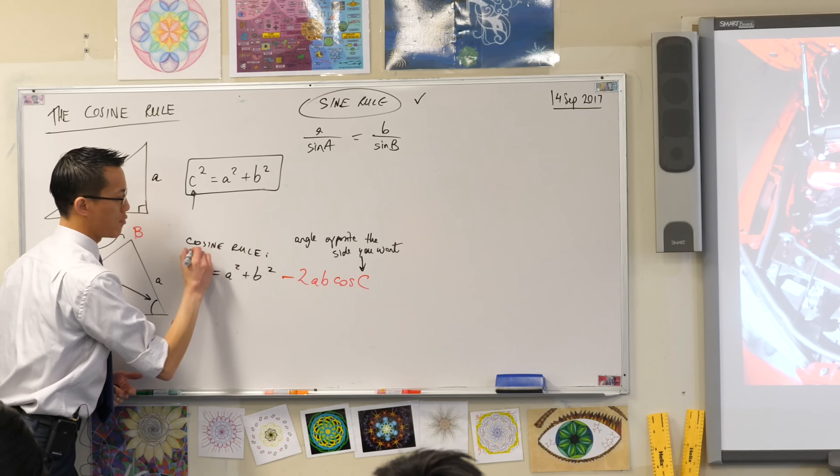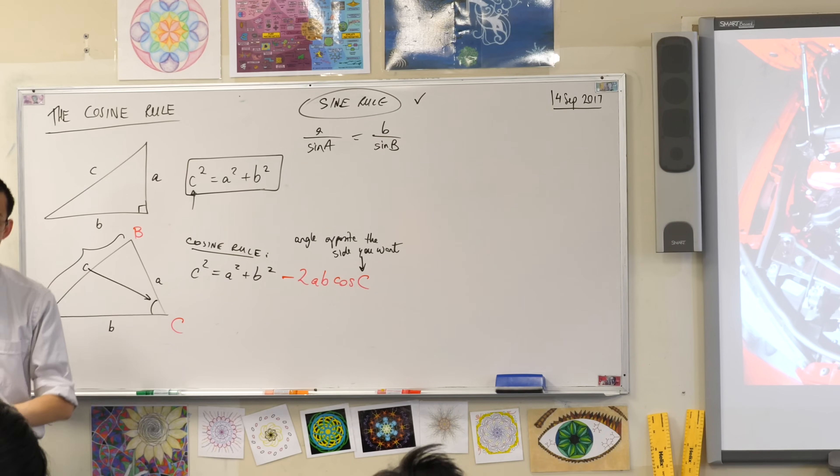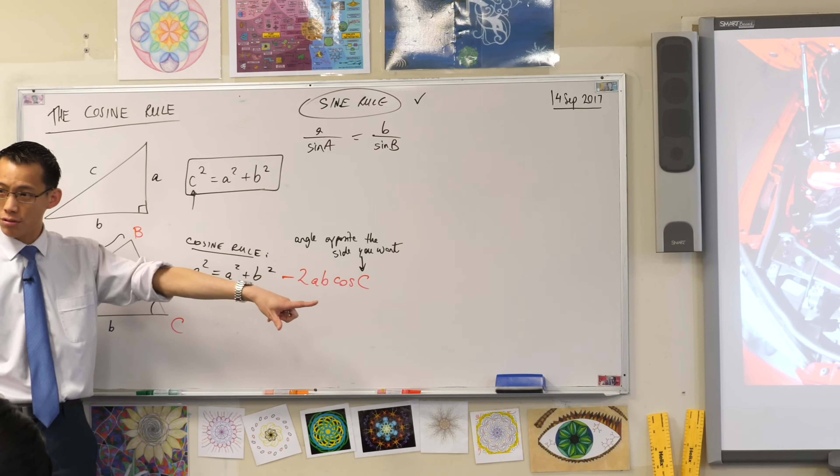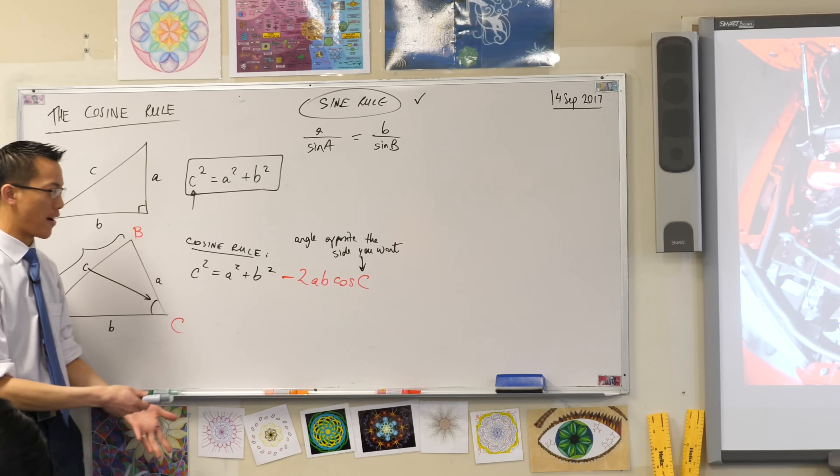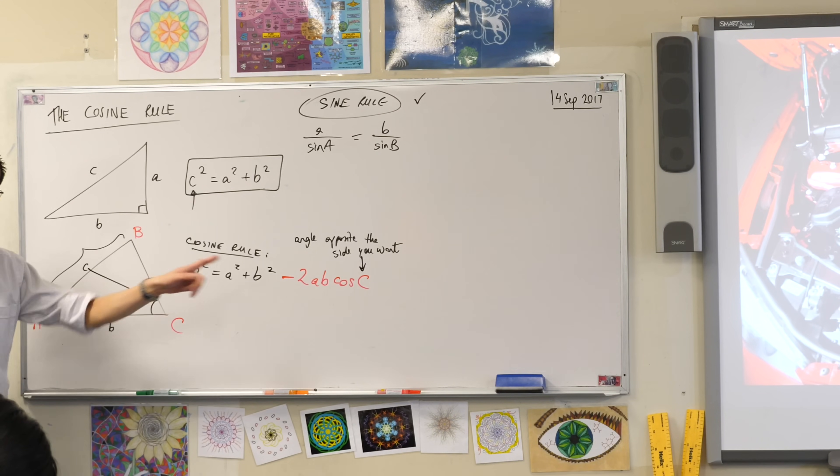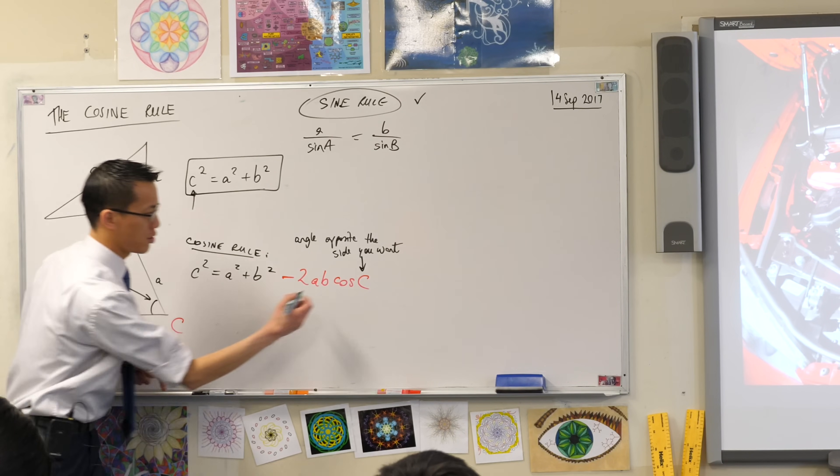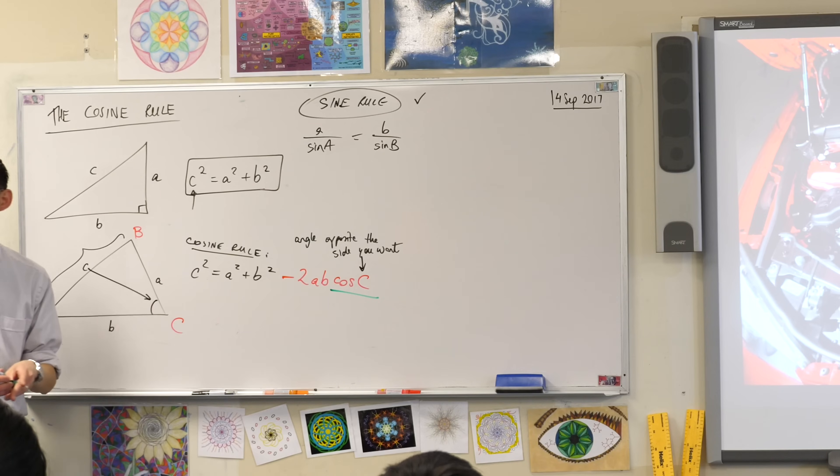Just like the sine rule, you can rewrite the cosine rule if actually you don't want a side. If you want an angle, you can rejig it to find out the angle. Let's do this. See this? I'm going to change the subject so that that is the subject. So, I'm going to have to rearrange a fair bit.